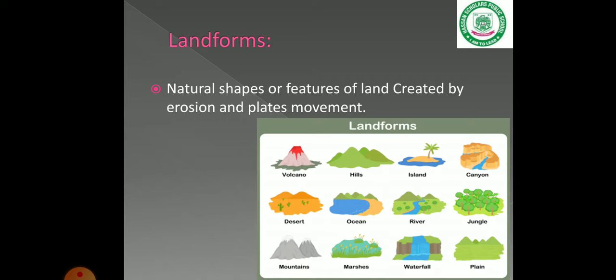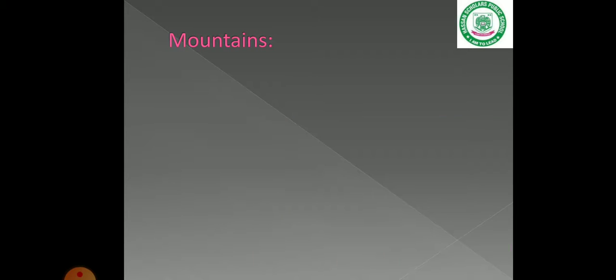Volcanoes are created by erosion. Other landforms include hills, valleys, islands, rivers, oceans, waterfalls, plains, jungles, and deserts. These are the different types of landforms.